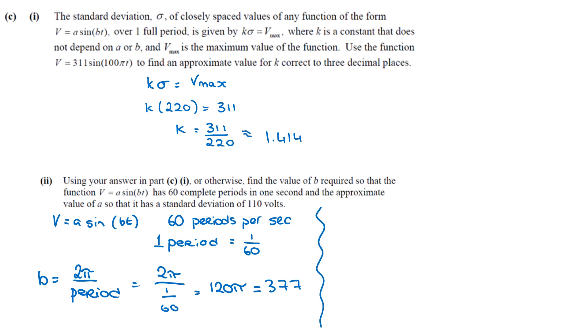The second thing that they've asked us is to find approximate value for A. So we're going to use the formula. So V max is equal to K standard deviation. So the maximum V is going to be 1.414, we can use that K because they told us back in part I that K is a constant that does not depend on A or B. It's constant, it doesn't change. And that's 110. And that gives us a V max of 155.54.